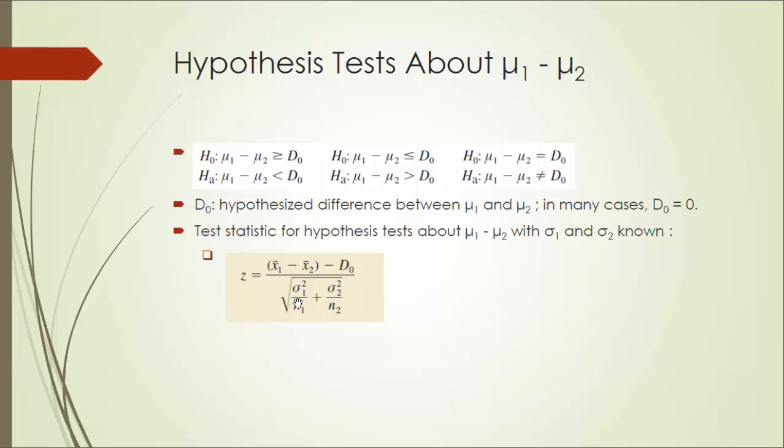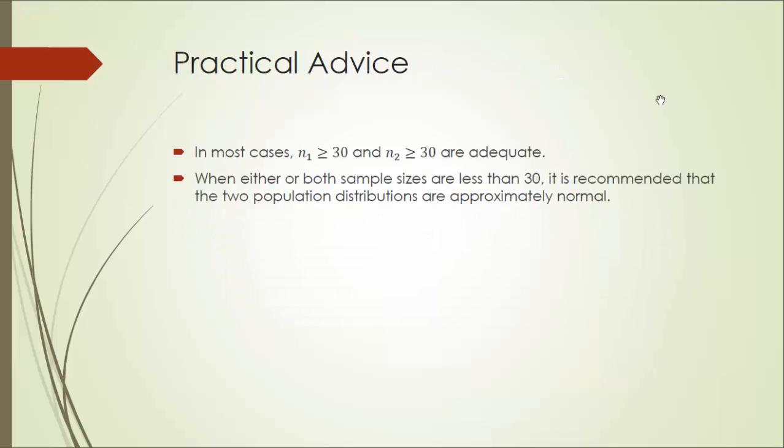The way we conduct the hypothesis testing is exactly the same as the way we did it when there's only one population mean. Practically, in most cases, if both sample sizes are greater than or equal to 30, that would be sufficient. Otherwise, it is better that the two population distributions are approximately normal. Next, let's look at one example of that.